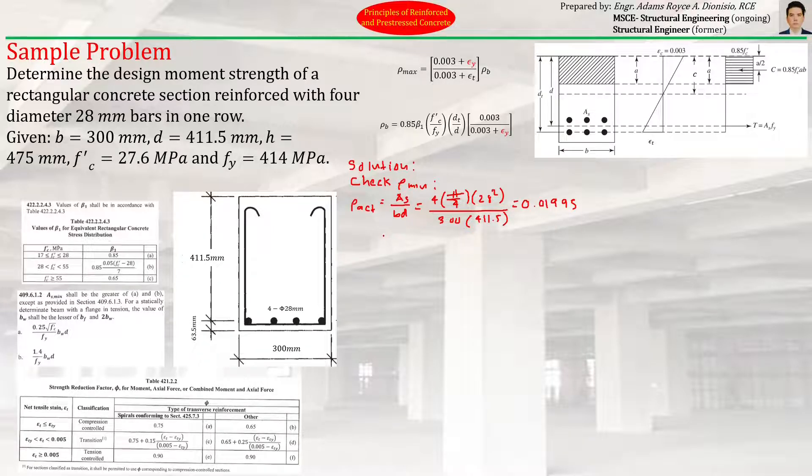Let's compare that to the minimum. ρ minimum is equal to 1.4 divided by fy = 414, which equals 1.4 over 414. The minimum steel ratio is 0.00338, which is definitely less than ρ actual.